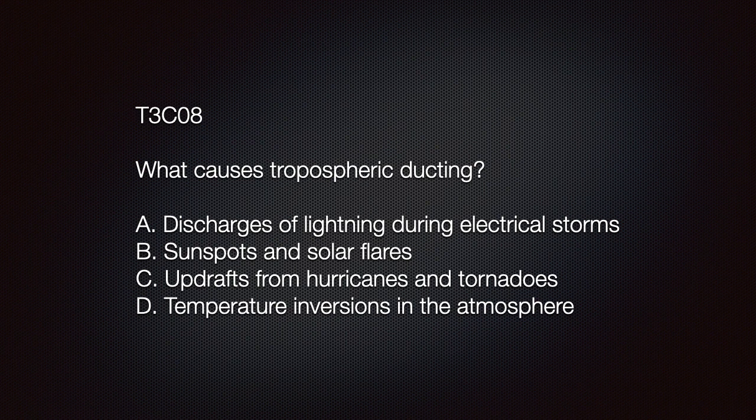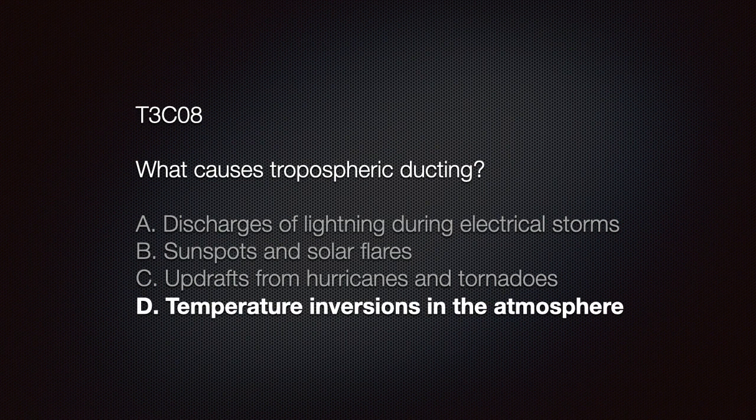The test question is: what causes tropospheric ducting? A) discharges of lightning during an electrical storm; B) sunspots and solar flares; C) updrafts from hurricanes and tornadoes; D) temperature inversions in the atmosphere. The correct answer is D — temperature inversions in the atmosphere.